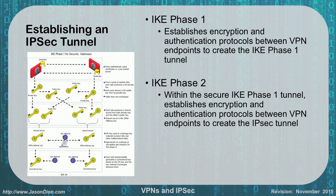In phase one we're going to establish our encryption tunnel and authentication protocols between the VPN endpoints — this will create the phase one tunnel, our initial tunnel. In phase two, within this secure phase one tunnel, we're going to establish our encryption and authentication between the VPN endpoints to create the second IPsec tunnel that we're actually going to use to transmit our data.